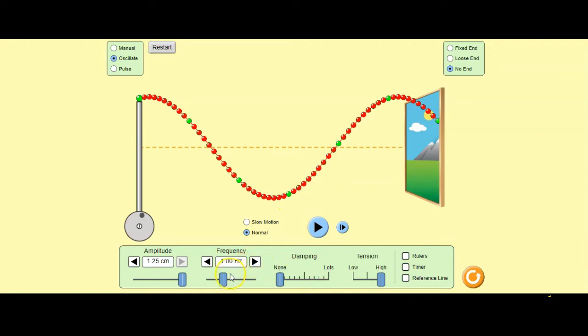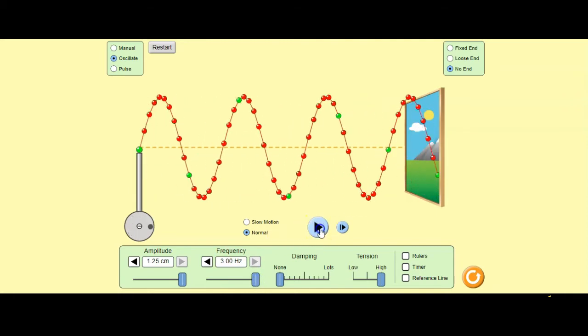Let me show you with a very high frequency. There you go. Peak to peak or trough to trough or really any point on a wave and its matching point on the next wave. That is a wavelength.